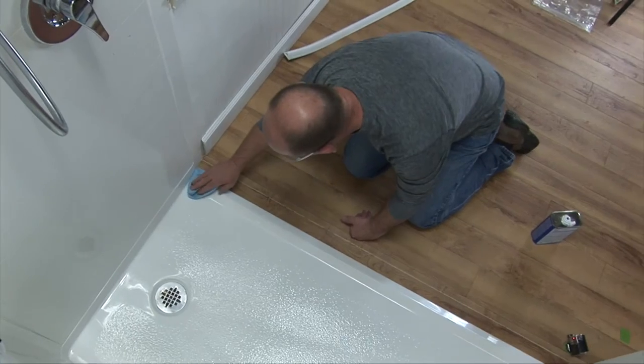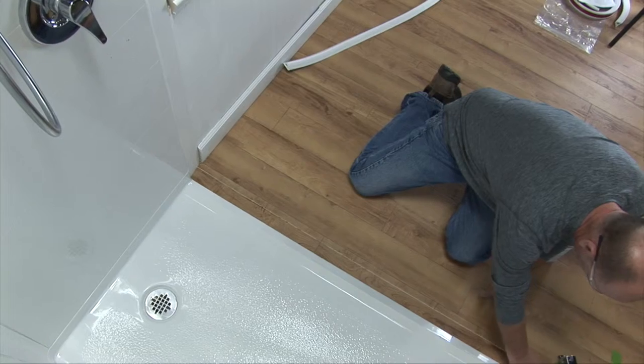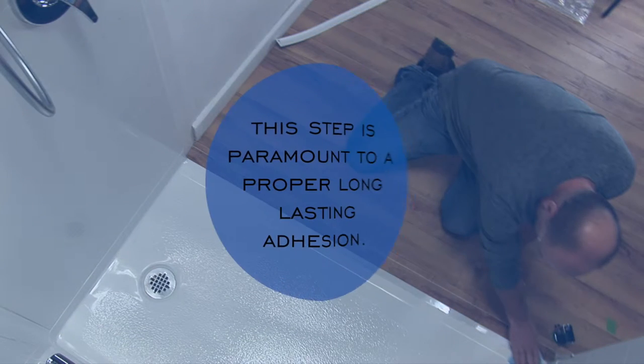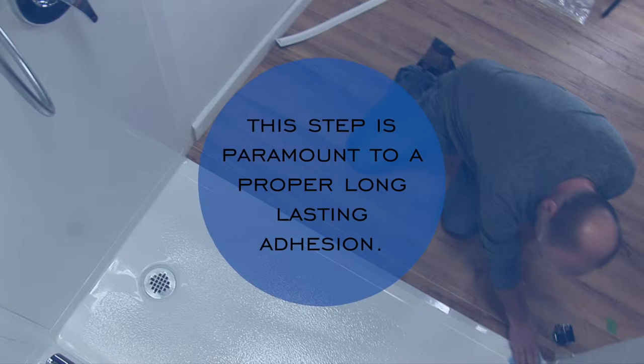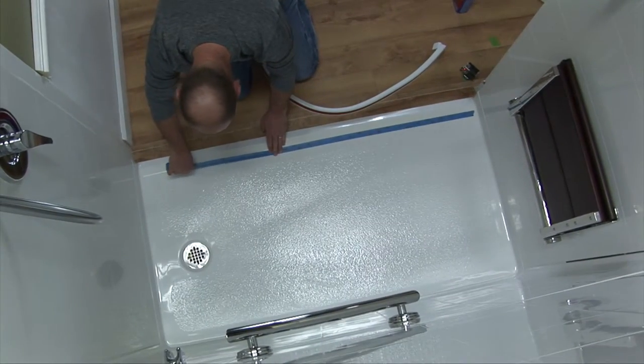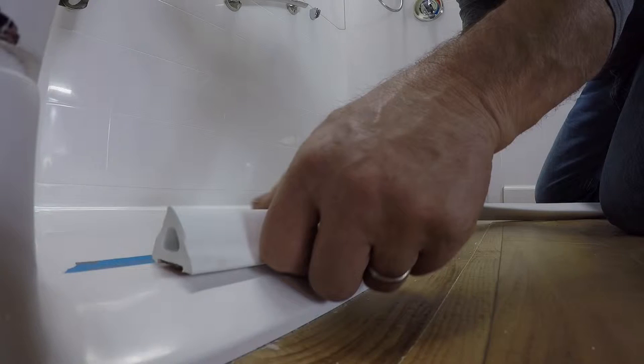Apply denatured alcohol liberally on a clean dry cloth and wipe threshold surface area thoroughly. This step is paramount to proper long-lasting adhesion. For best results, it is helpful to draw or snap a temporary line as a visual guide. For this application, the installer will apply to the flat surface of the threshold following the feature line where the interior slope begins.